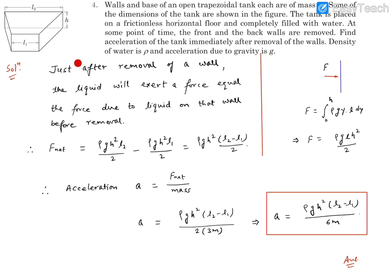So how to solve it? Let's consider this solution. Before that, let's consider this figure first. This is a trapezoidal tank. That means this open part is upside and the liquid is completely filled on this. So the material walls are this vertical wall, this front wall, this wall and this back wall and the base. And it says each of these walls are of mass M.